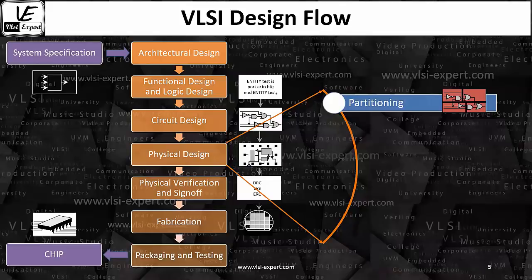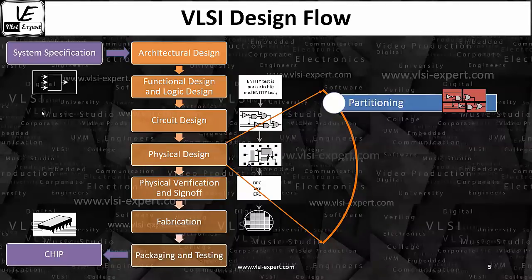When I'm saying lower technology node, it means lots and lots of gates and logic are there. If you are not going to divide your design, it is a hell lot of work — you cannot finish that particular part. I'm talking about technology nodes like 90 nanometer, 180 nanometer, 45 nanometer, 25 nanometer. As we are moving toward the lower technology node, partitioning is very important.